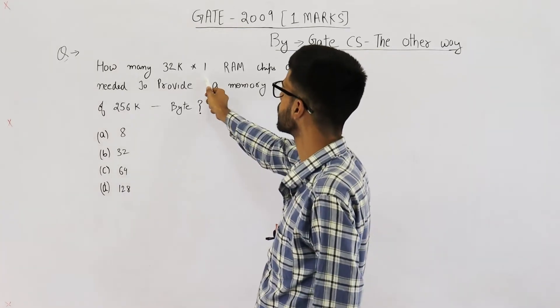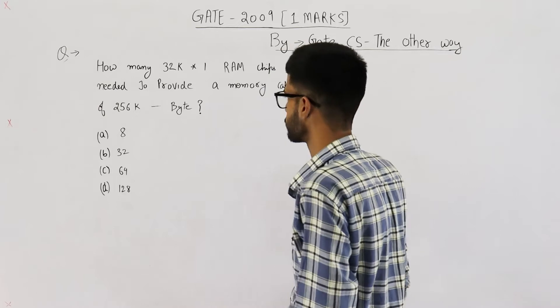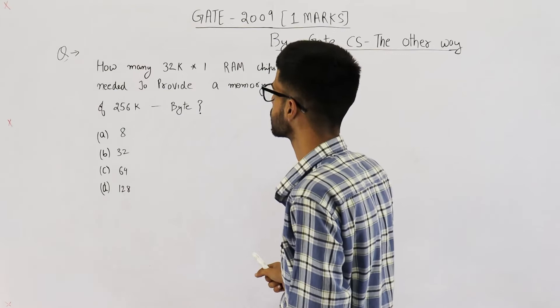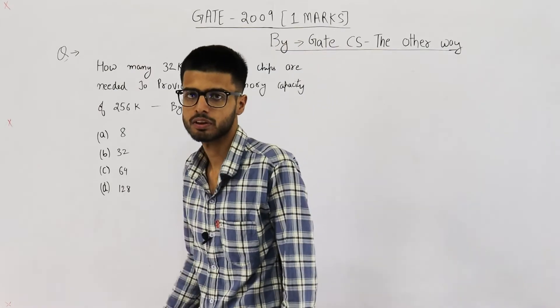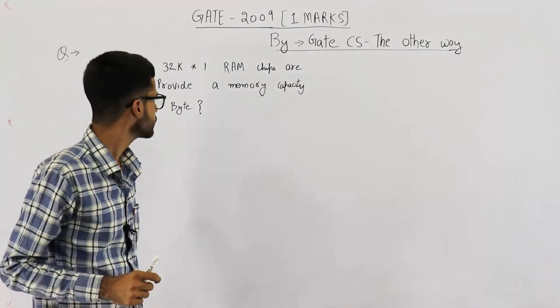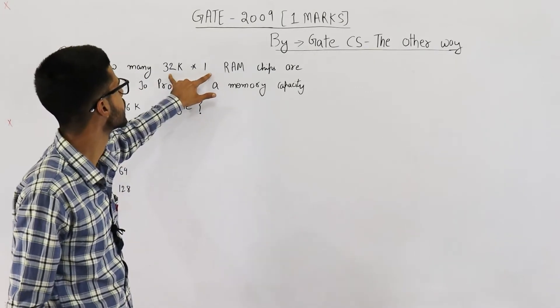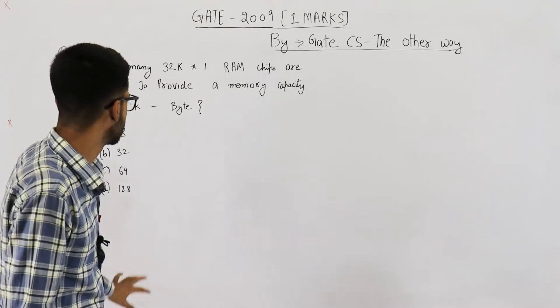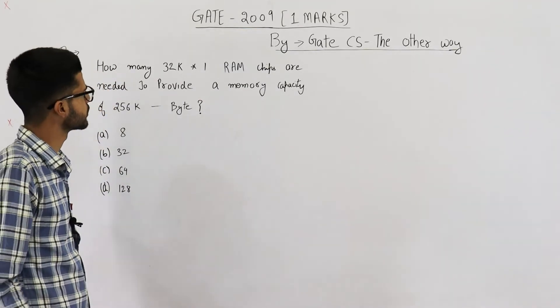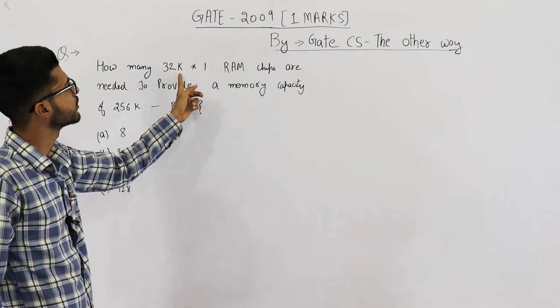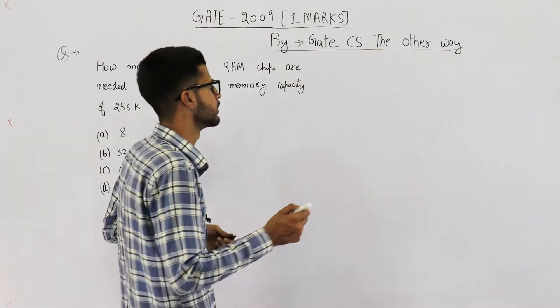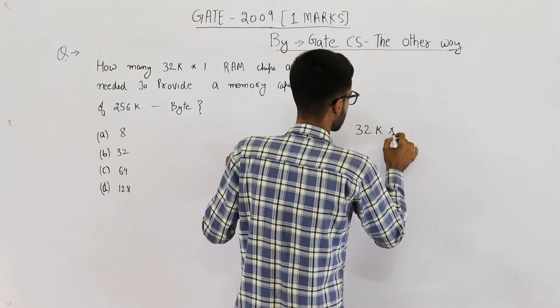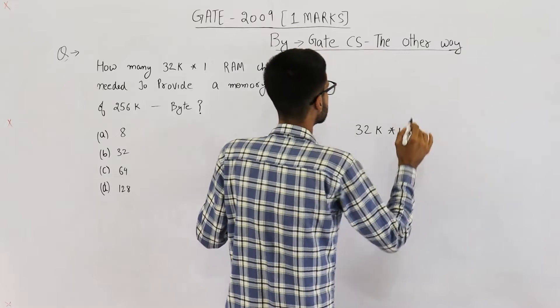The statement is how many 32k x 1 RAM chips are needed to provide a memory capacity of 256k byte? Now there is a small confusion. What is the unit of this 32k x 1? Is it 1 bit or 1 byte? Looking at options you can make a few assumptions that this is 32k x 1 bit. So first assumption is 32k x 1 bit.